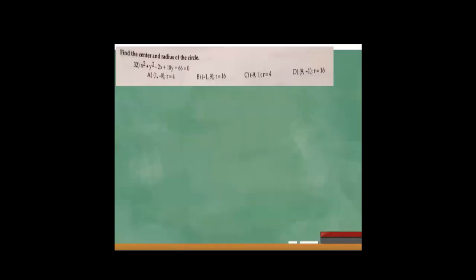Find the center and radius of a circle. When both x and y are squared, you could have a circle, ellipse, or hyperbola. They're telling us this is a circle, so I need to write it in general form: (x minus h) squared plus (y minus k) squared equals r squared. I'll complete the square, starting by gathering the x terms: x squared minus 2x. To complete the square, the coefficient of x squared must be 1.